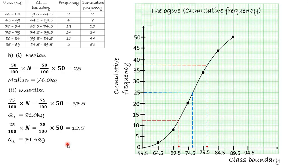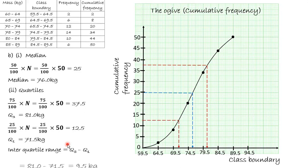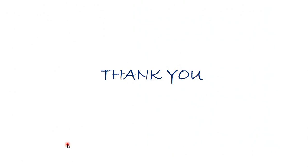Finally, the interquartile range is Q3 minus Q1, which is 81.0 minus 71.5, giving us 9.5 kilograms. Thank you for your attention this lesson, and thank you for purchasing the course. May God bless you.